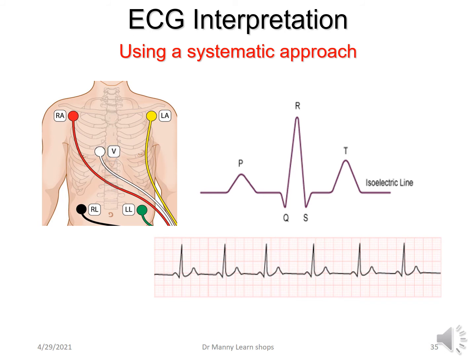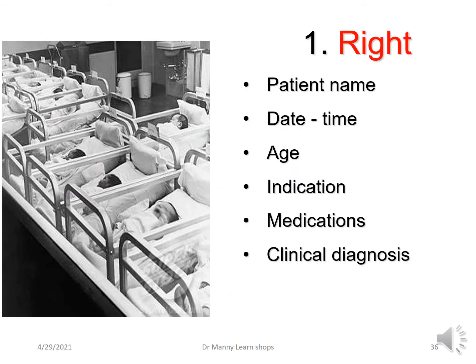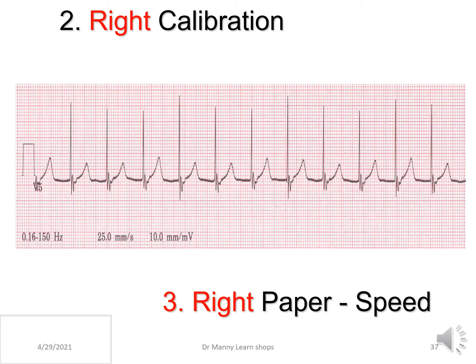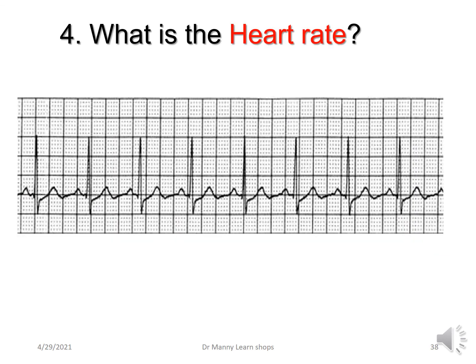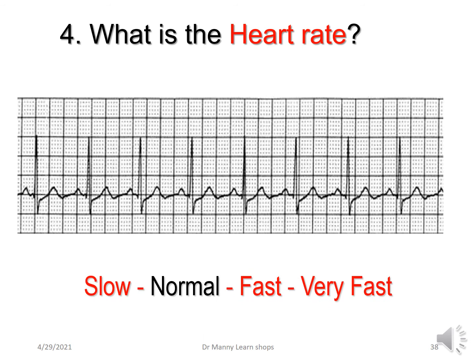If we want to interpret an ECG, it's always good to use a system. There are a number of different systems; this is the one I'm advocating, but you can use whichever system you choose as long as you use it. I always start with the right patient, date, age, indication, medications, and clinical diagnosis — identify the patient correctly. Then you check the right calibration: 10 millimetres or 1 millivolt; right paper speed: 25 millimetres per second — unless there's an indication to do it differently, which a physician would have to order. Then determine whether the heart rate is slow, normal, fast, or very fast.